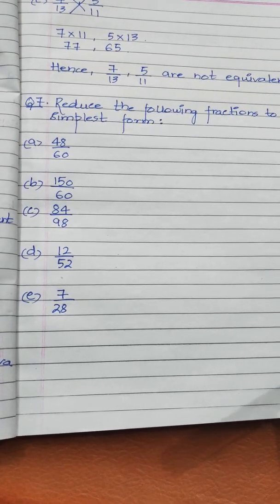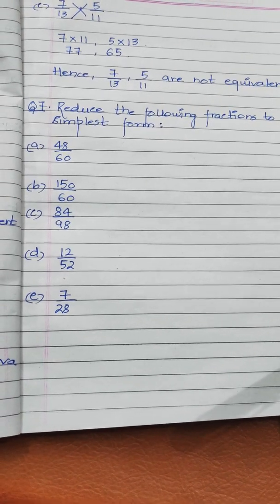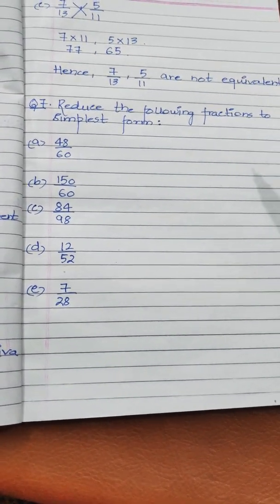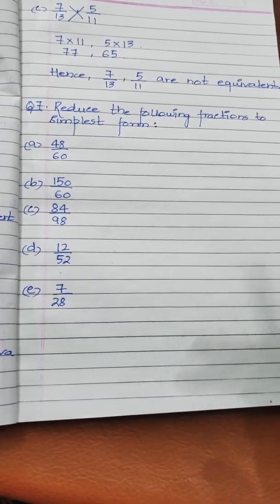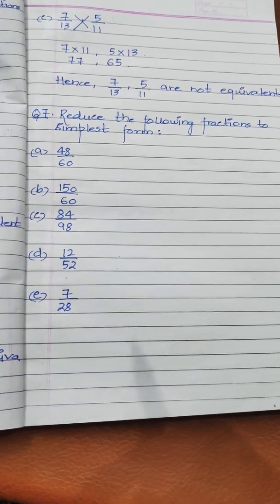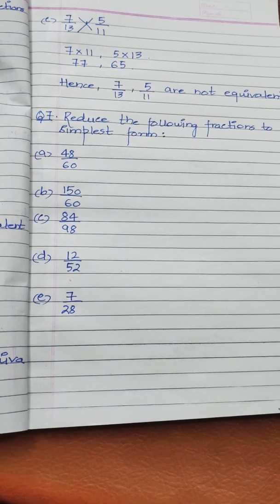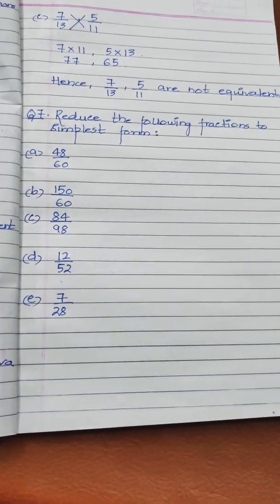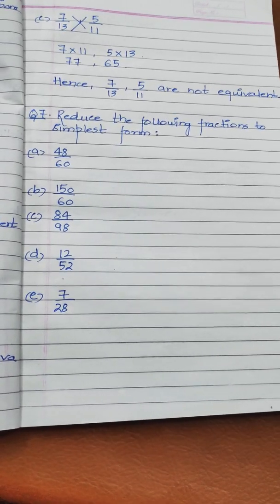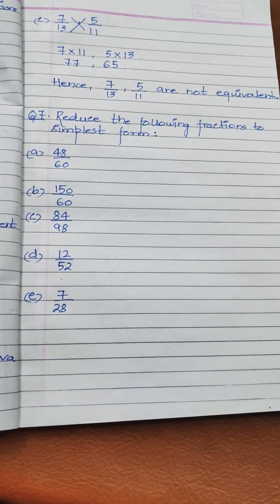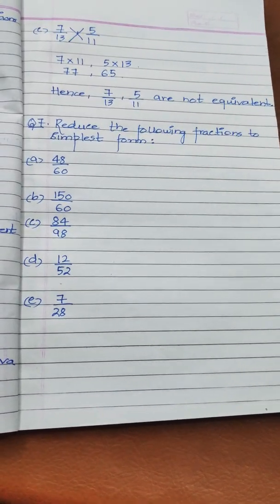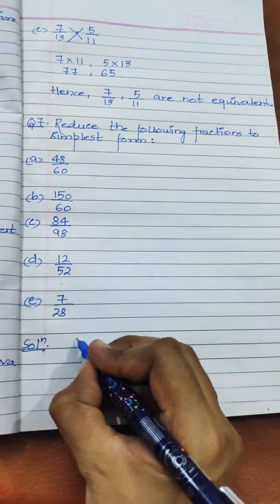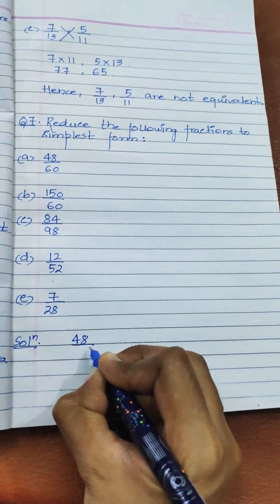Now let us come to question number 7 of the same exercise. The question is: reduce the following fractions to simplest form. A fraction is in its simplest form if the numerator and denominator have no common factor except 1 — meaning their HCF is 1. There is an easiest way to solve these types of questions. Let us start with part A and I will show whether the answer has common factor 1 or not.